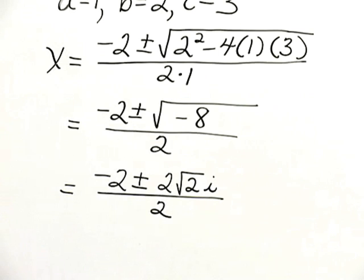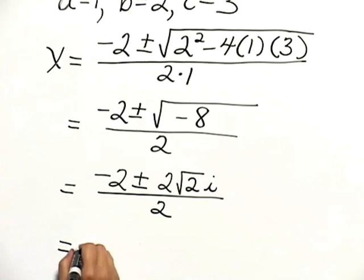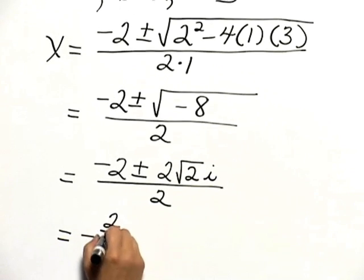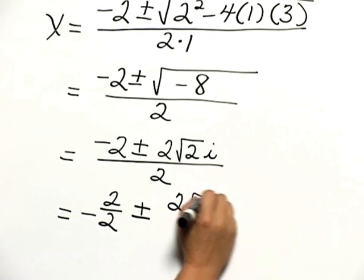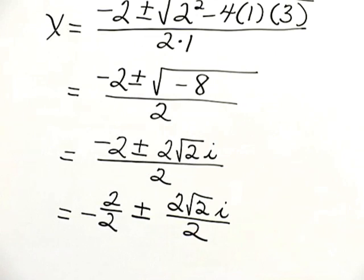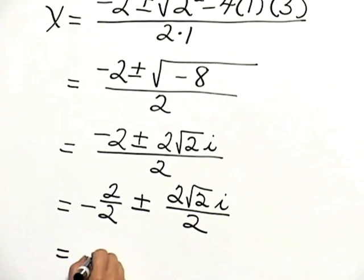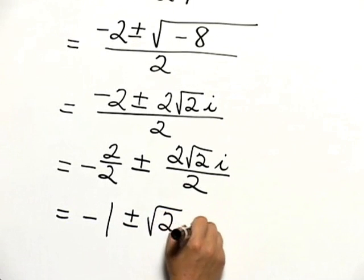We need to write this in the form a plus bi anyway, so let's separate this out and make this negative 2 over 2 plus or minus 2 square root of 2i over 2, which would give us negative 1 plus or minus the square root of 2i, because 2 over 2 is 1.